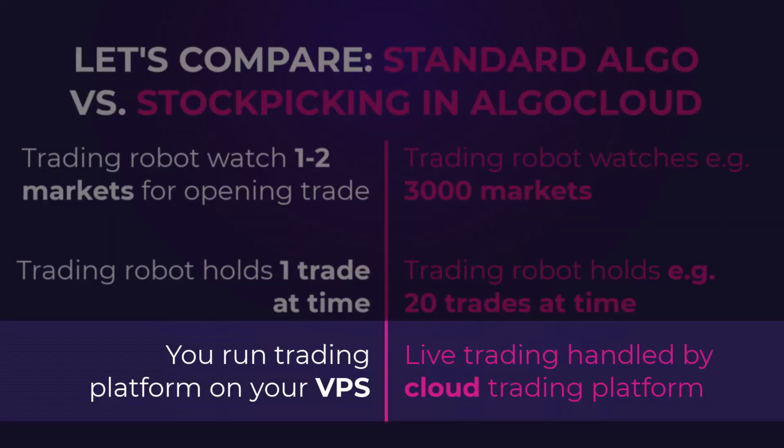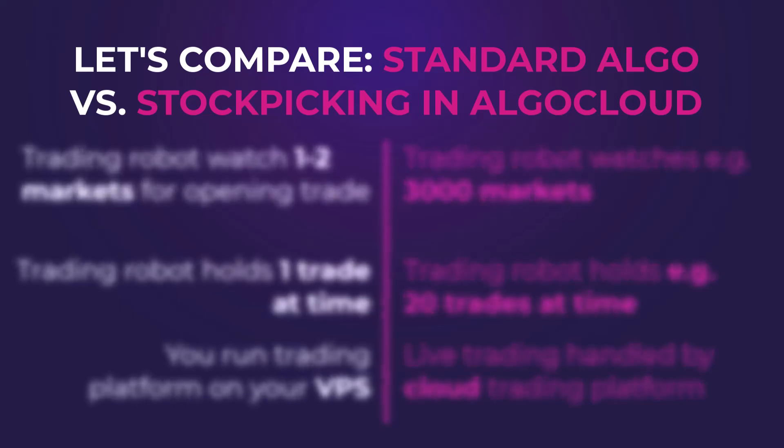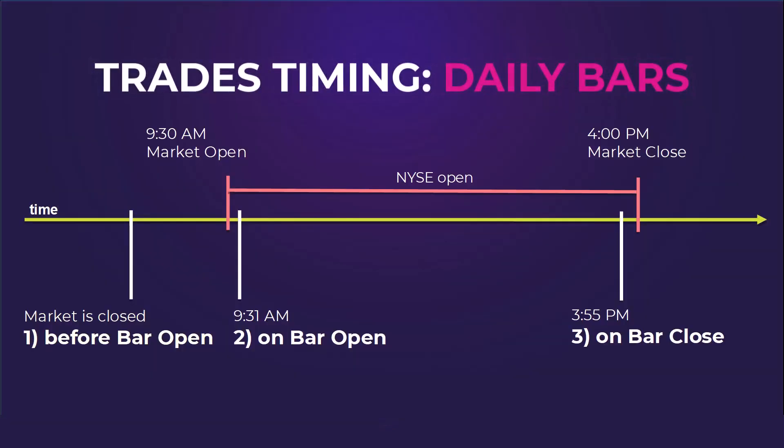The third difference is related to live trading. For classic algo you need a platform running on your VPS, but in the case of AlgoCloud everything runs smoothly on the cloud trading platform. Stock picking strategies use daily data — you can open or close trades three times a day: before the bar open, at the bar open, and before the bar closes. That gives you plenty of opportunities to find new strategies and adapt to market movements.